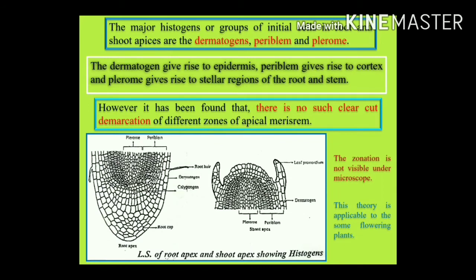This theory is only true for root apex. It is not applicable to the shoot apex of higher plants because in most gymnosperms and angiosperms, the shoot apex does not have distinct differentiation of three layers. Except for the three histogens described, a fourth type of histogen is also present in monocotyledon root apex, known as calyptrogen. Root cap is produced by calyptrogen in monocotyledons.